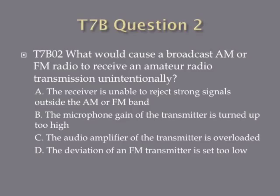Question 2. What would cause a broadcast AM or FM radio to receive an amateur radio transmission unintentionally? A. The receiver is unable to reject strong signals outside the AM or FM band. B. The microphone gain on the transmitter is turned up too high. C. The audio amplifier of the transmitter is overloaded. Or D. The deviation of an amateur transmitter is set too low.